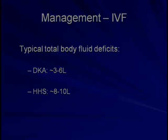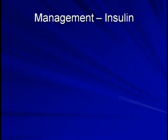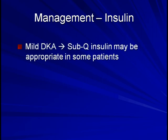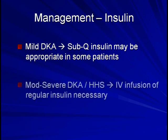What about insulin? In mild DKA — that is DKA with an arterial pH greater than 7.25 and serum bicarbonate level greater than 15 milliequivalents per liter — and with an alert patient, sub-Q insulin is a reasonable choice. However, in any DKA more severe than this, or in any form of HHS at all, a continuous infusion of intravenous regular insulin is the preferred route of delivery.